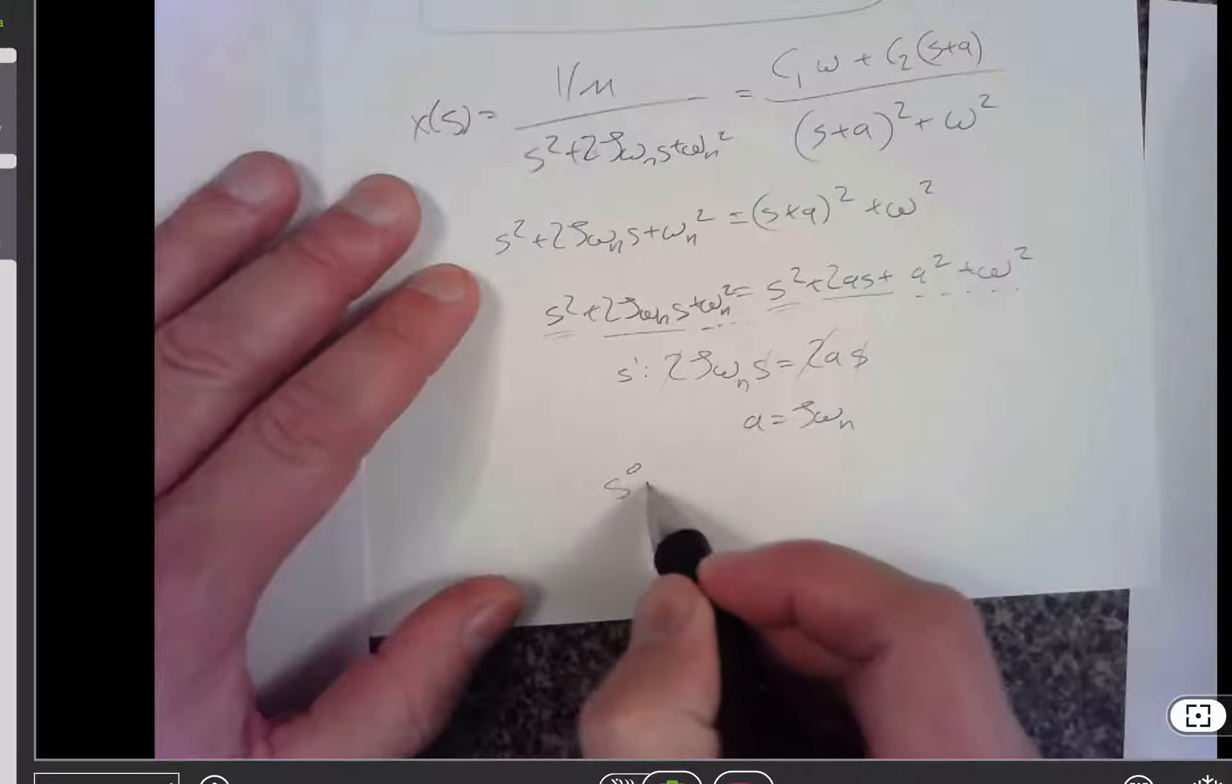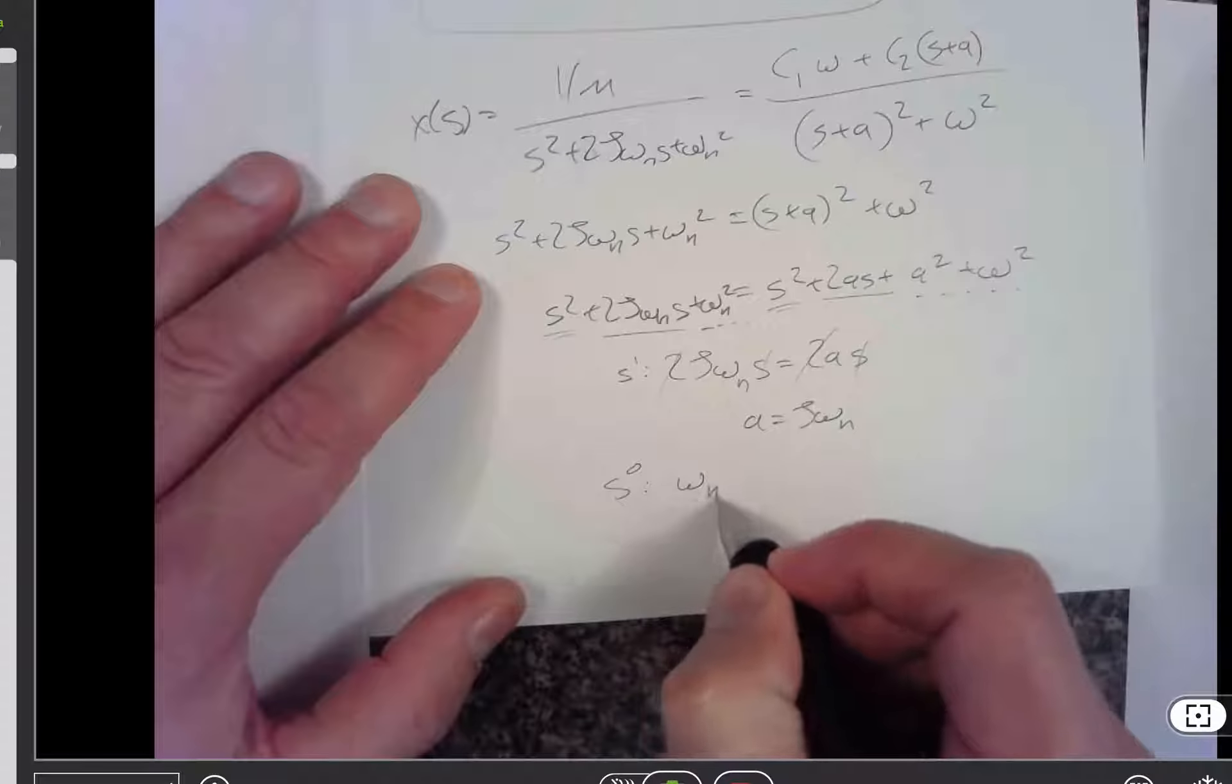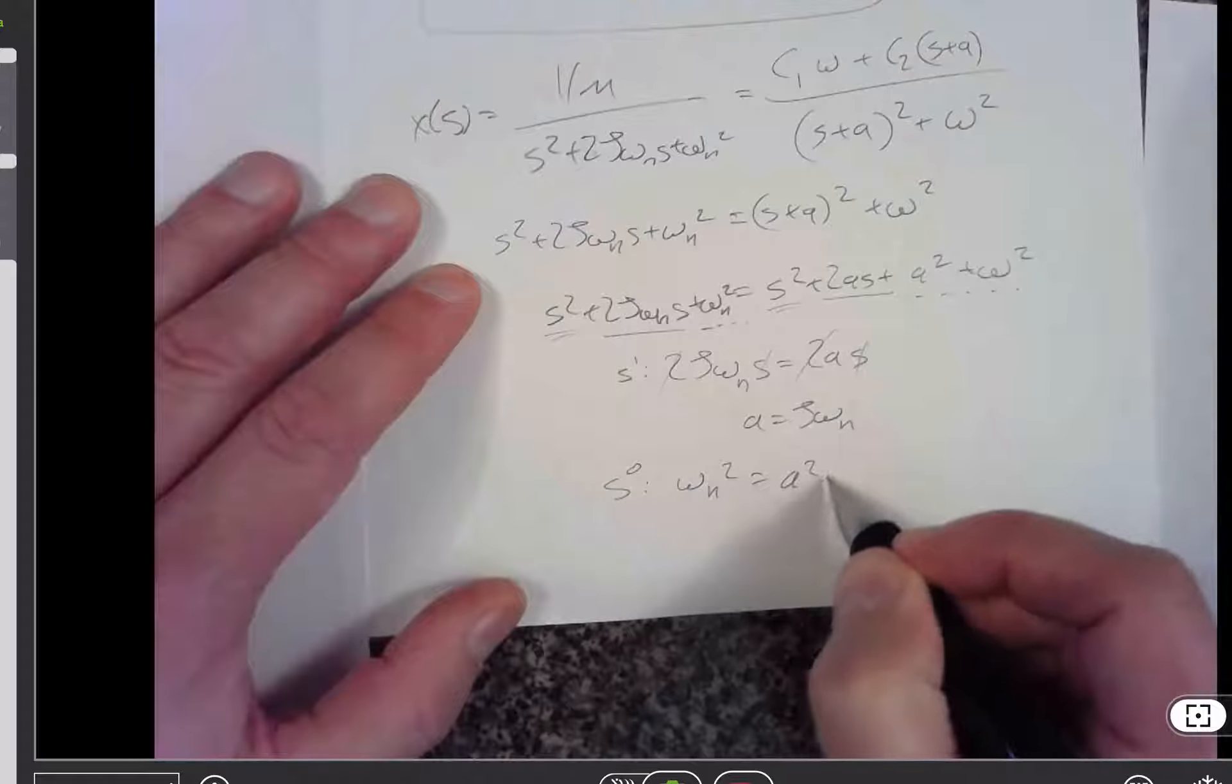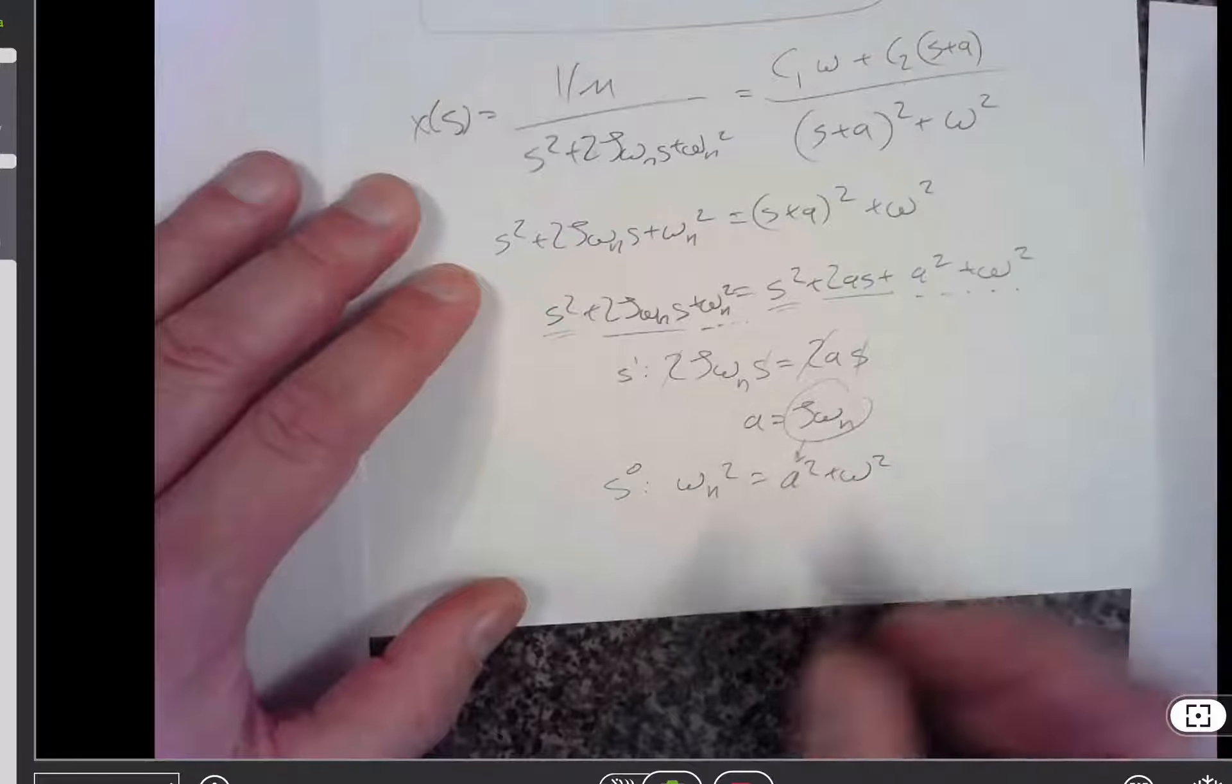And if I look at the s to the zero equation, I've got omega n squared is equal to a squared plus omega squared. Well, I have this, let's shove it in there.